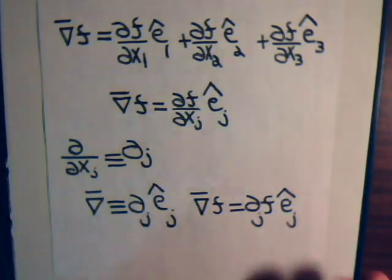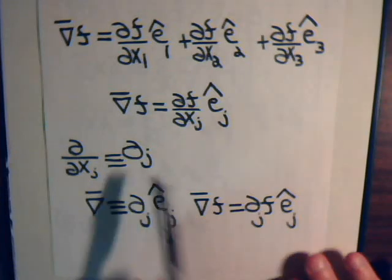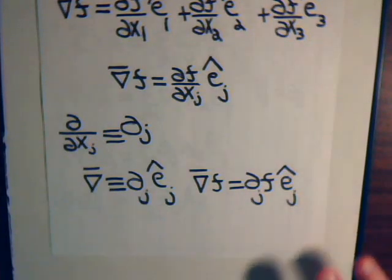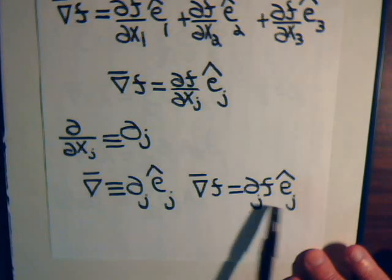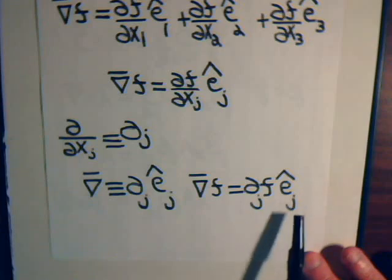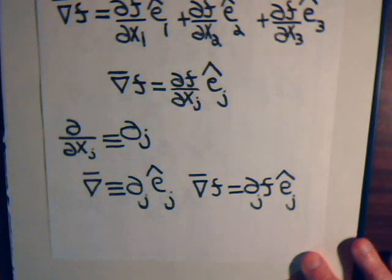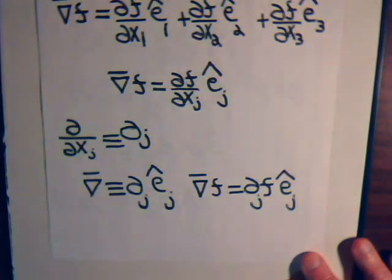Now, if we take this definition — partial with respect to x_j, we'll just call that partial_j — then with that notation, the del operator is just partial_j times e_j. So if we have the del operator operating on a scalar f, it would be partial_j of f times e_j. We're taking partial derivatives of the scalar with respect to j, multiplying by e_j, and since we have a repeated index, we're summing.